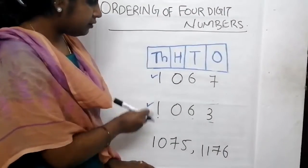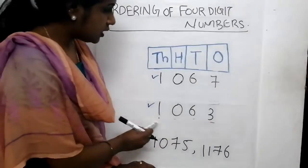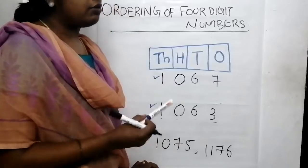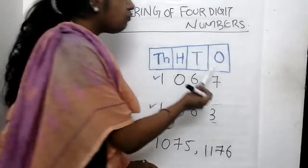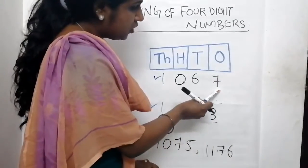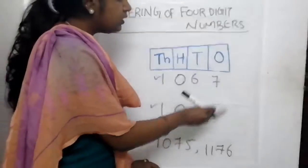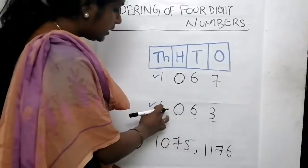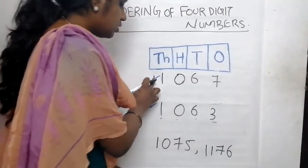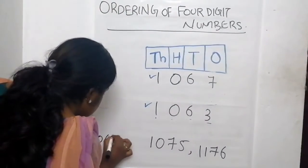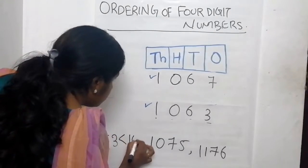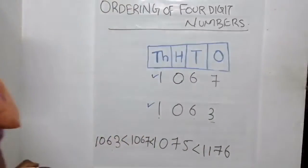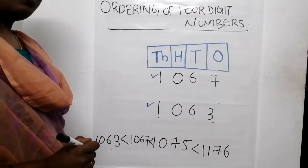Again look at here - what are the numbers left? 1,067 and 1,063. We know in tens place these 2 numbers have the same value, so we have to move to the next place - ones place. In ones place: here it is 7 and here it is 3. In between 7 and 3, which number is smaller? We know 3 is smaller. So 1,063 is less than 1,067 is less than 1,075 is less than 1,176. Now we got the ordering.